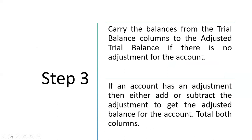We have adjustment columns after the trial balance, so we have to adjust the balances in the original trial balance to come up with the adjusted trial balance. If the balances have no adjustment, we just transfer those balances to the adjusted trial balance columns. However, if an account has an adjustment, we either add or subtract the adjustment to get the adjusted balance. We then total both columns.